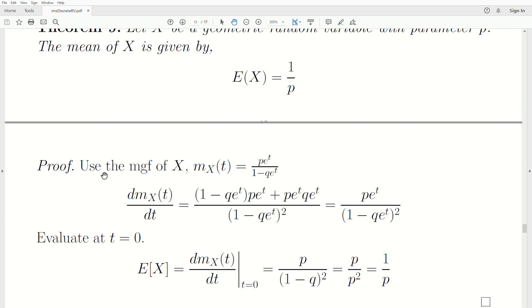So let's prove this. Use the moment generating function of X, which we derived in theorem eight. We need to take the derivative of it. And so there's a formula for the derivative of this fraction. Remember, it's with respect to T. And then it simplifies to this expression on the right.